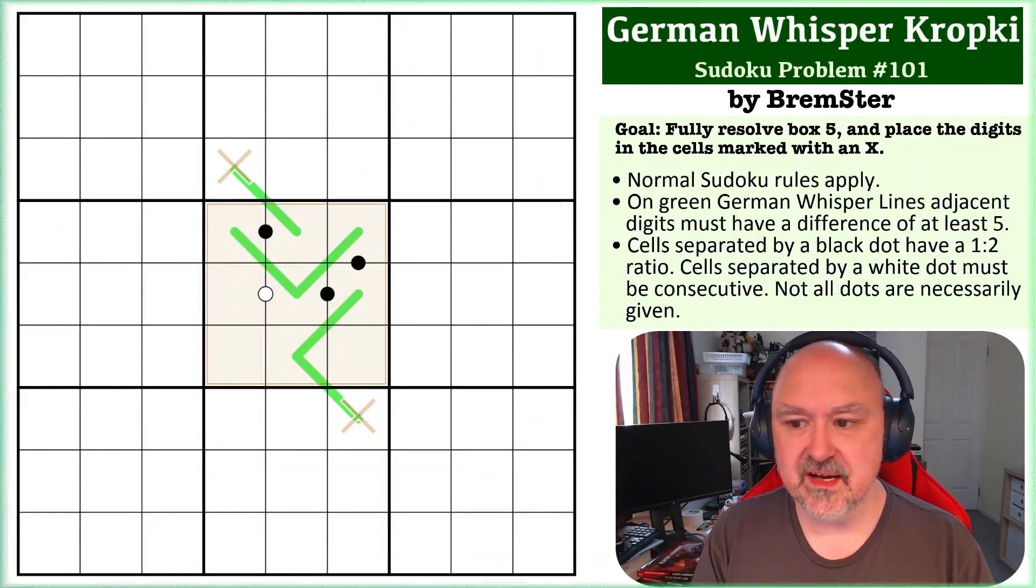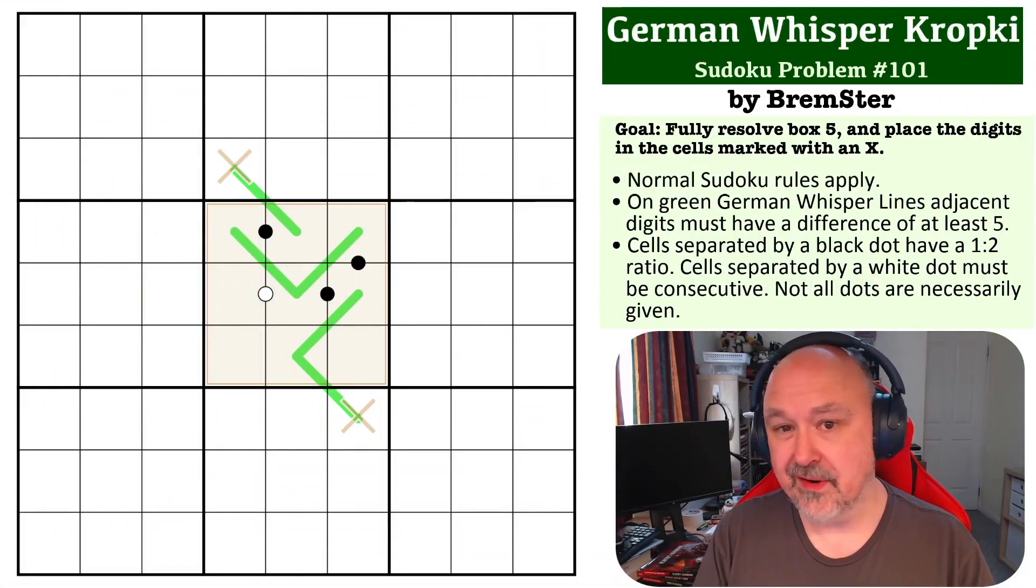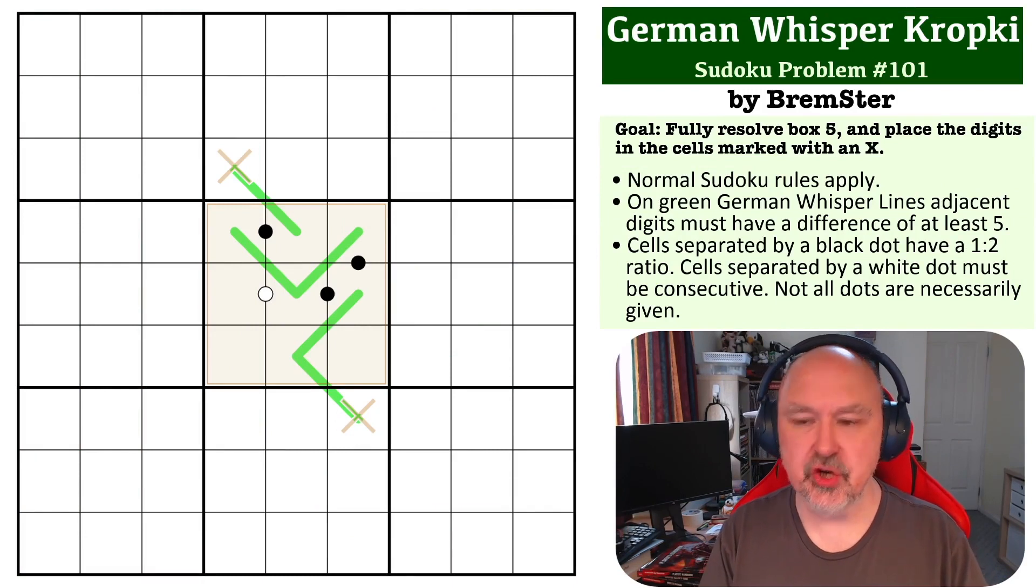Hey everyone, this is Brimster and this is number 101 in the Sudoku Problem Series. This is a German Whisper Kropki problem which I came to by just playing around with stuff and liking what I saw.